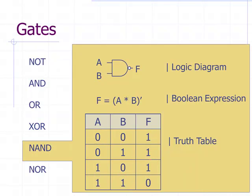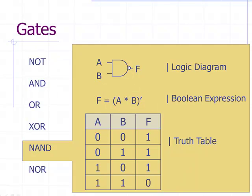The next one is called a NAND gate. A NAND gate is just an AND gate with a little bubble on the end, and the equation looks just like the AND equation with a negation symbol added at the end. If both inputs are high, you get a zero. If any of the inputs are low, you get a one — the opposite of the AND gate, which is why it's called a NAND gate.